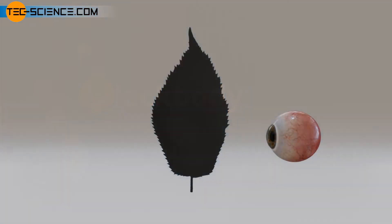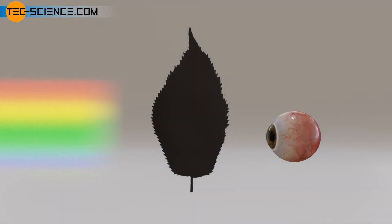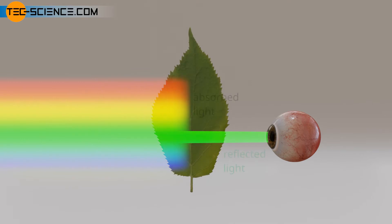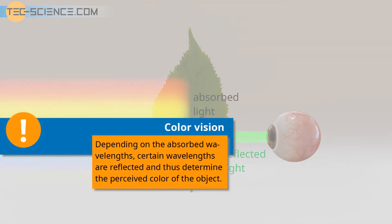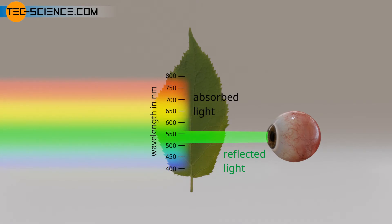If white light, which consists of all known colors, hits a non-transparent object, then a certain part is always absorbed and the rest is reflected. Depending on which wavelengths are absorbed, the reflected light consists of certain wavelengths, and these reflected wavelengths determine the perceived color of the object. A green leaf, for example, absorbs almost all wavelengths except the green wavelength range between 500 and 550 nanometers.